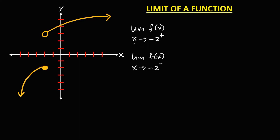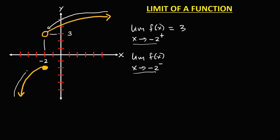Since x approaches negative 2, this is negative 2 for x. To find the limit of f of x as x approaches negative 2 from the right — this is from the right of negative 2 — the limit is equal to positive 3. Then for the limit of f of x as x approaches negative 2 from the left — this is the left of negative 2 — the limit is equal to negative 2.